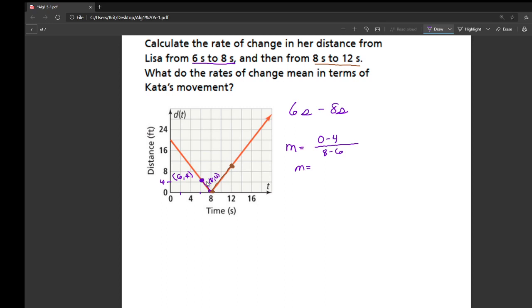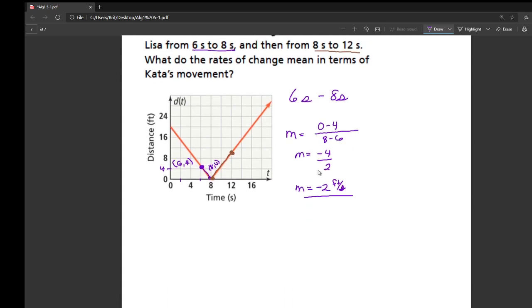My Y values, my Y2 is zero. So I'm going to do zero minus four, and then I'm going to do eight minus six. Now, I should be expecting to have a negative slope here, because the graph is going downhill. So if you don't have a negative slope here, you done messed up. Make sure to watch for that. Zero minus four is negative four. Eight minus six is two. Negative four divided by two is negative two.